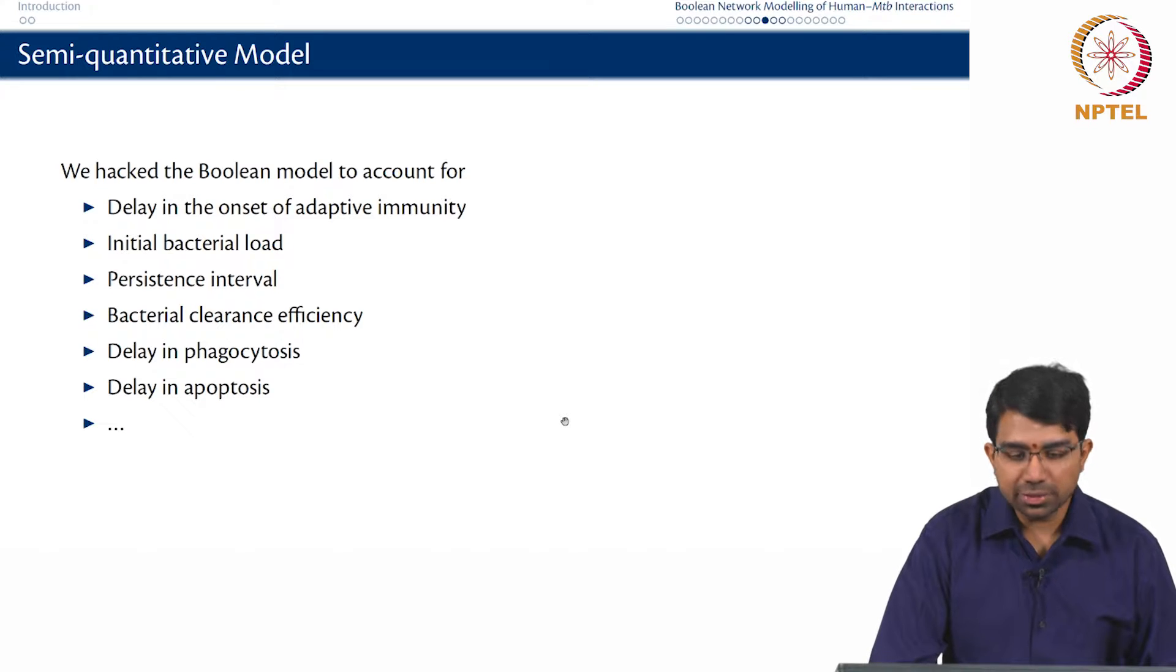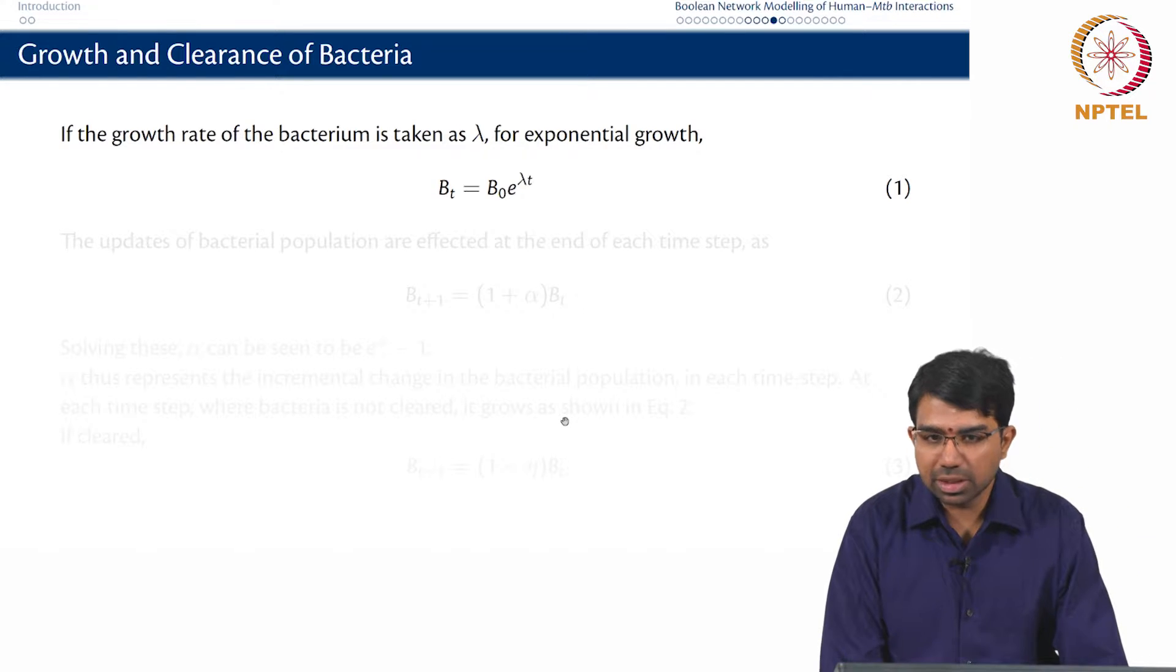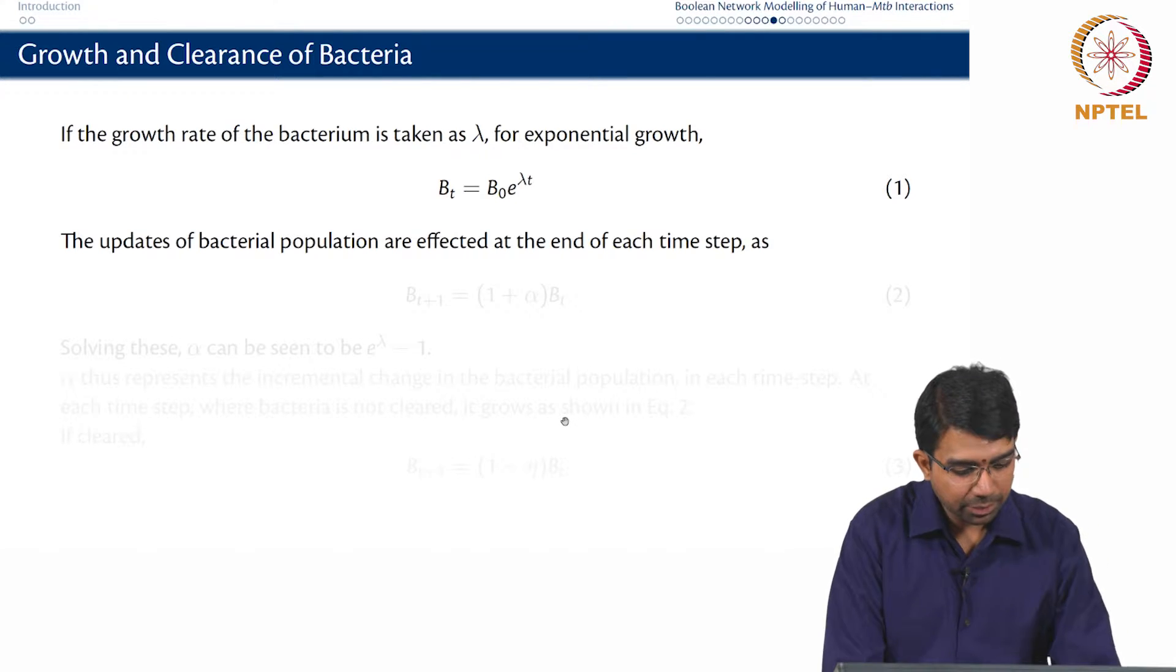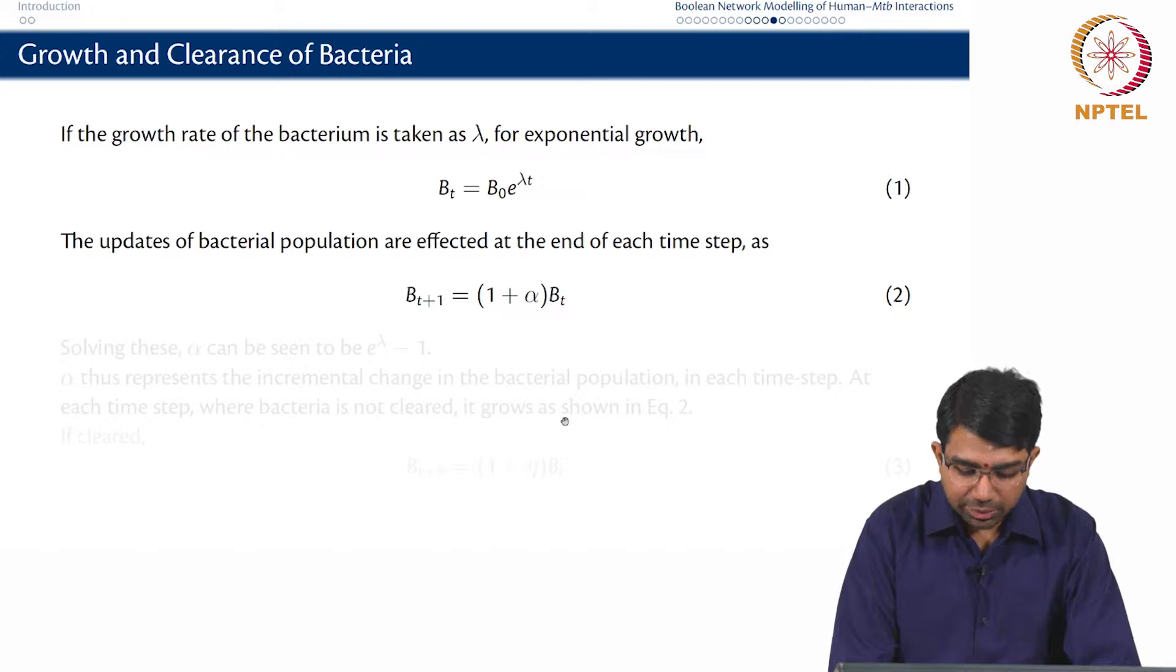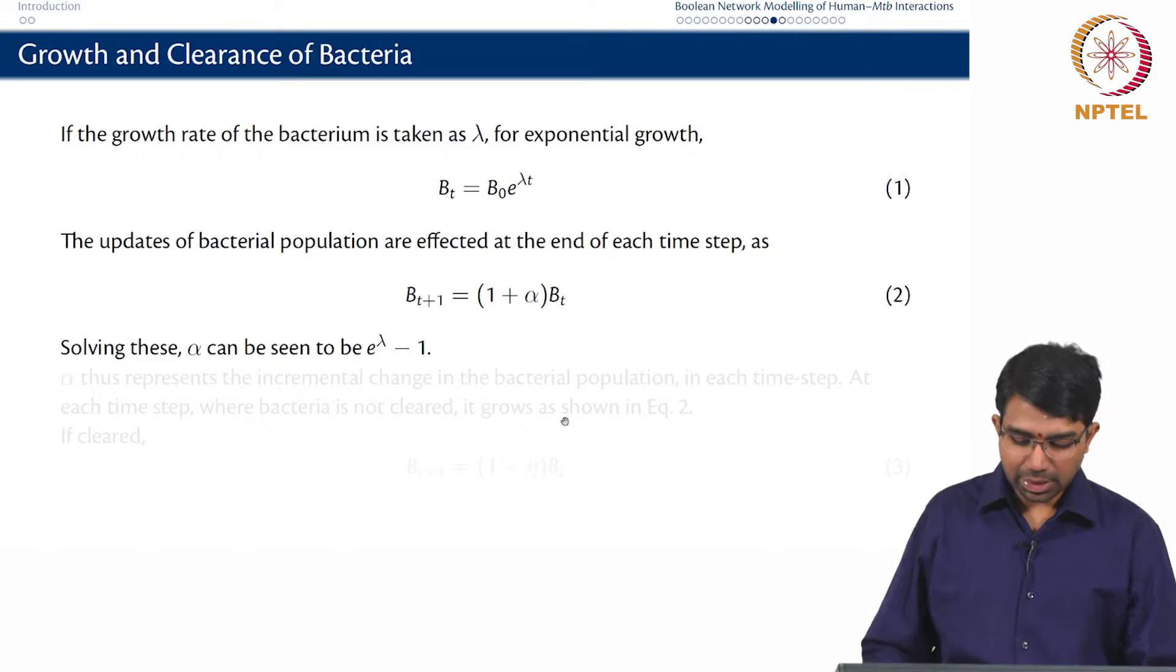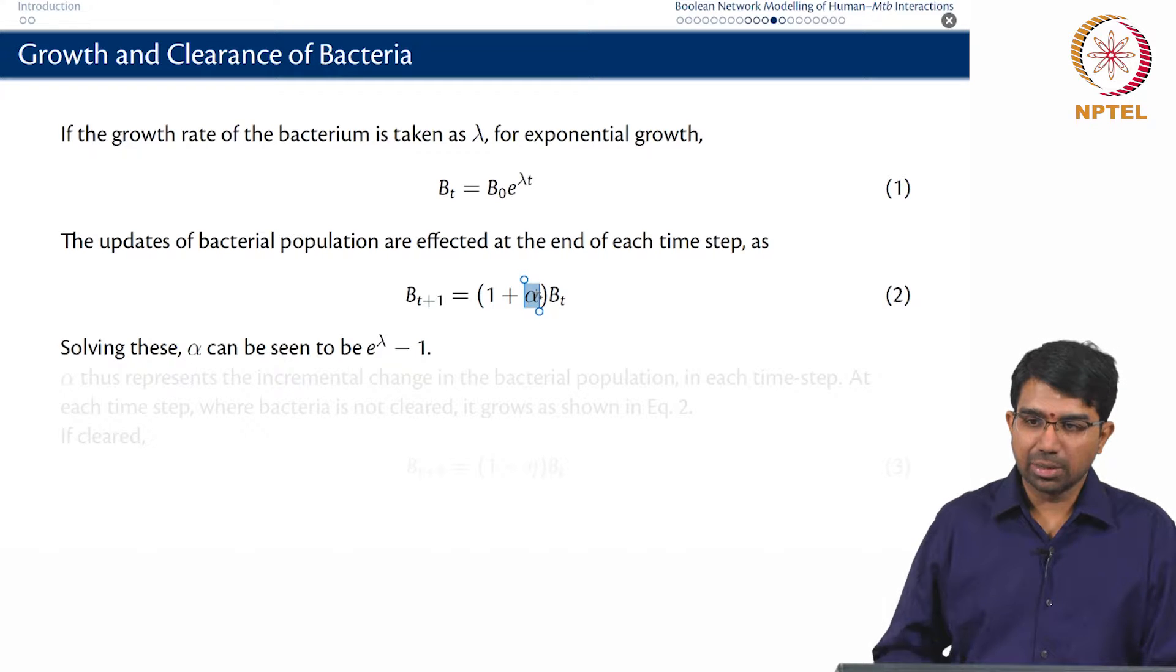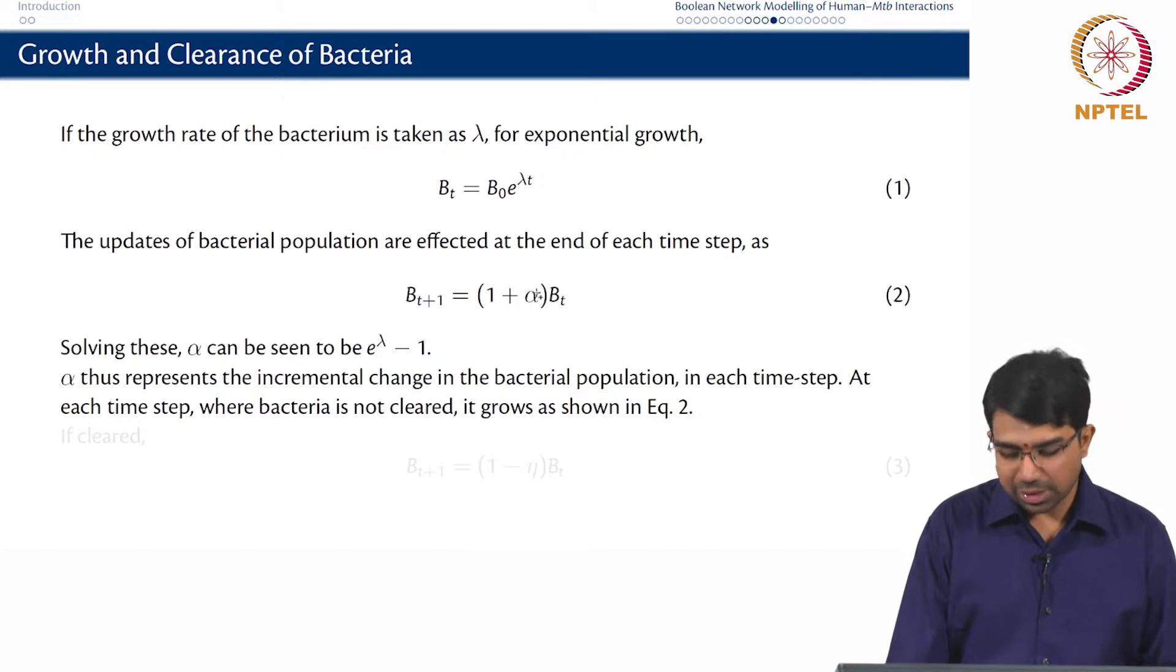So we made essentially a semi-quantitative model for this. If the growth rate of bacterium is taken as lambda for exponential growth, you can think of a simple equation like this. So B_t is B_0 times e to the lambda t and we can update the population in this fashion. So we can say B_t+1 is 1 plus alpha times B_t and solving this you can see that alpha is nothing but e to the lambda minus 1. So we essentially used alpha as an input parameter to the model and alpha is nothing but the incremental change in bacterial population at each time step.